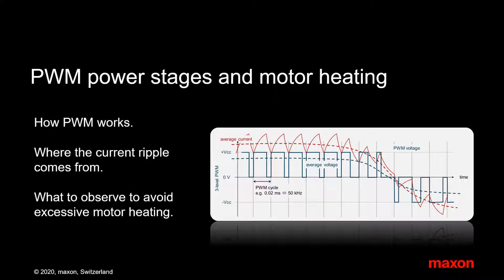Pulse Width Modulation or PWM is a method to generate different average voltage levels in the power stage of controllers in an energy efficient way. However, PWM leads to a current ripple in the motor that can cause excessive heating. This video highlights the process and shows solutions.